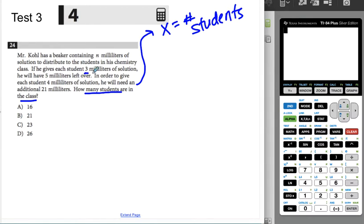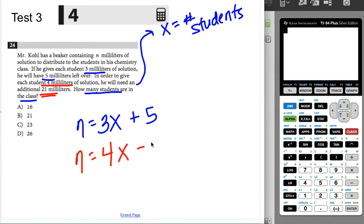Here's what we know. If he gives each student three milliliters, he'll have five milliliters to spare. So I know that n is three times the number of students plus the random five milliliters that are left over. But I also know that if he gives every student four milliliters, he's actually going to end up short 21 milliliters, meaning that n is four times the number of students. But he's short 21 of the milliliters he needs.